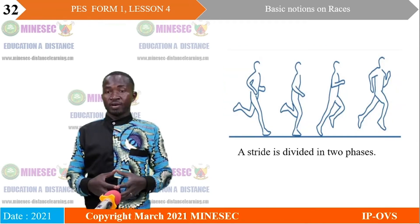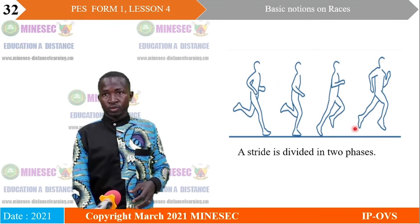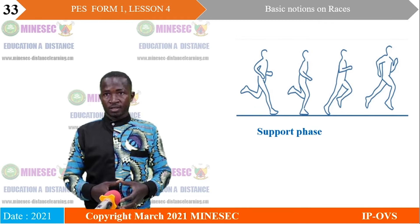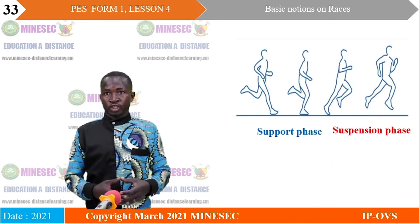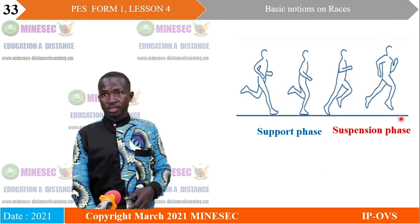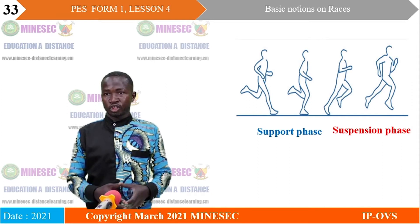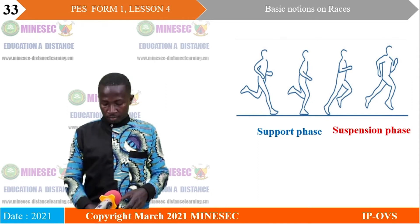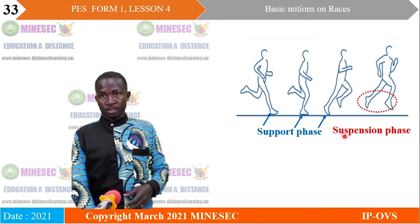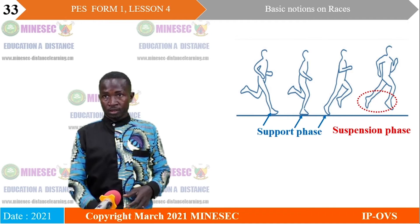A stride is divided into two phases. The first phase is the support phase, where one leg is in contact with the ground. The second phase is the suspension phase, where both legs are temporarily suspended from the ground. You can see a demonstration of the support phase in the images, and the circle shows the legs temporarily suspended from the ground — representing the suspension phase.